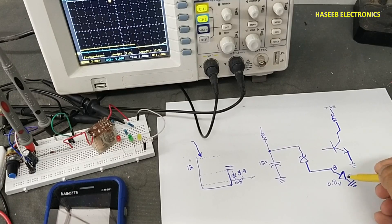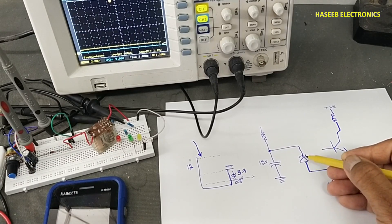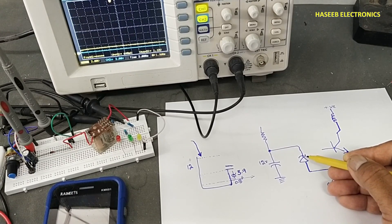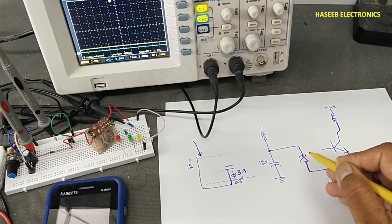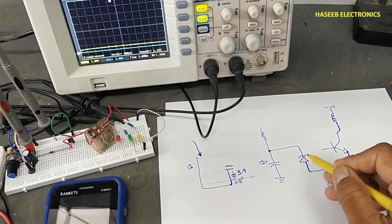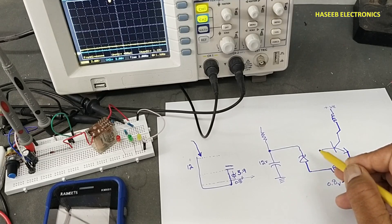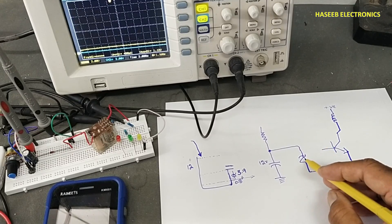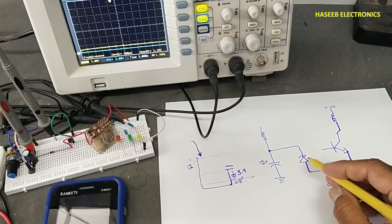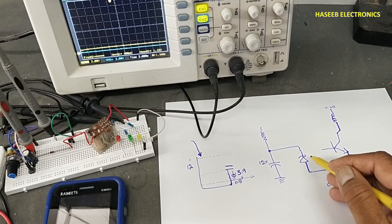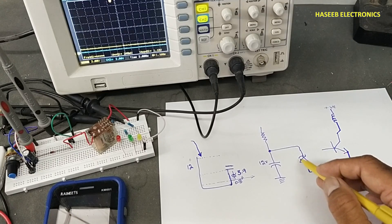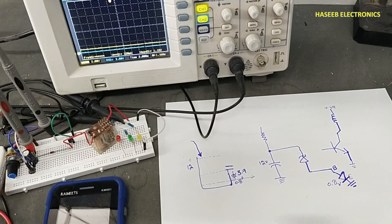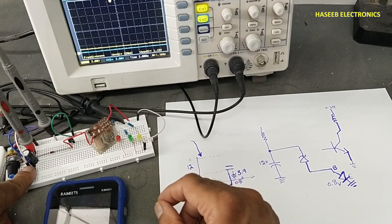Now if we look at this diode — it is connected in reverse bias. Why reverse bias? Because a zener diode always works in the reverse region. When the voltage reaches its breakdown voltage, at that point it will allow zener current to flow. Let's check this circuit again.